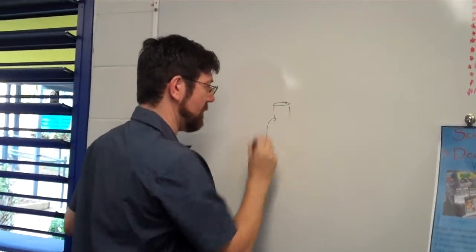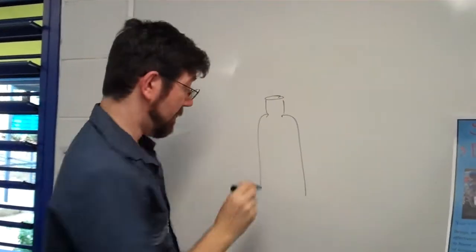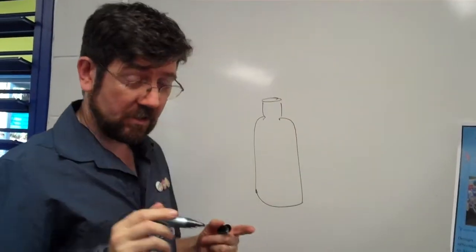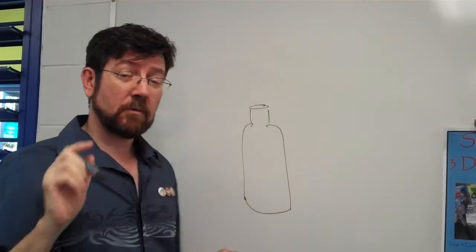Alright, so what you've got is your bottle, like this. I'm not going to draw the container around the outside. But basically you've got your 600ml bottle and you need to put liquid inside water.